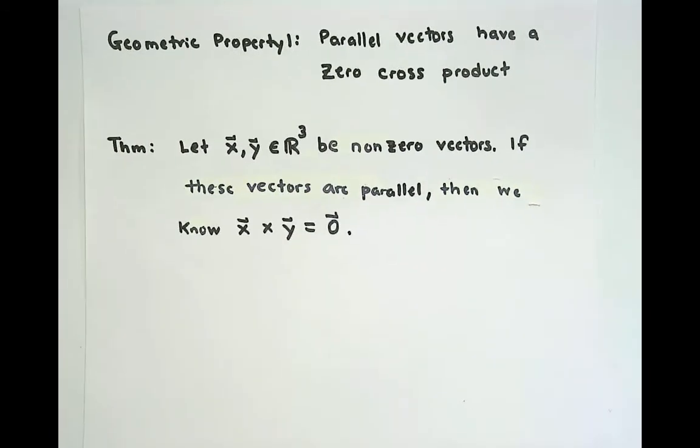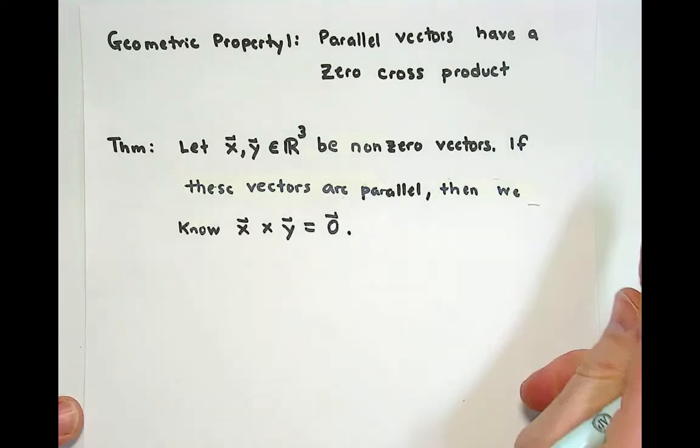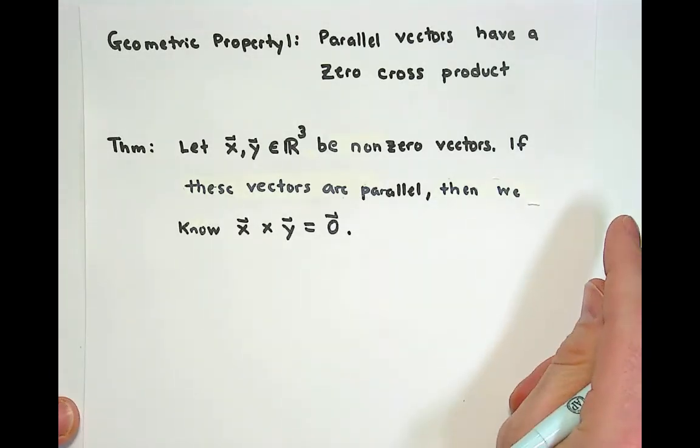In this video, we're going to start our conversation about the geometric interpretation of the cross product as an operation. Let's begin with our first proposition, or you could call it a theorem if you're excited about this, which says that the cross product of two parallel vectors is zero.